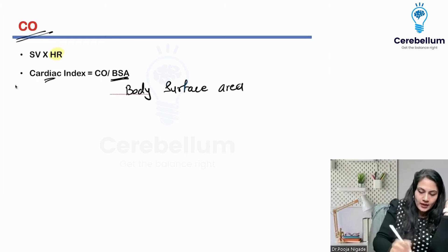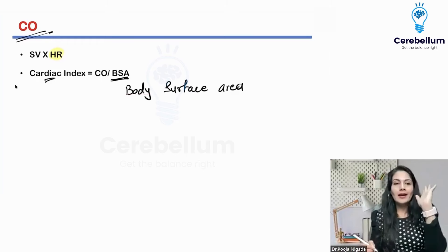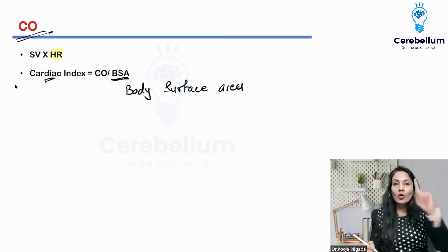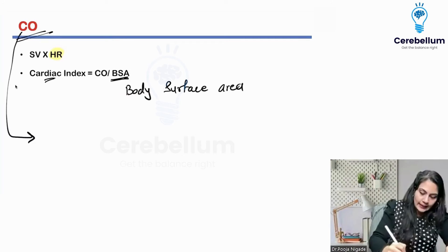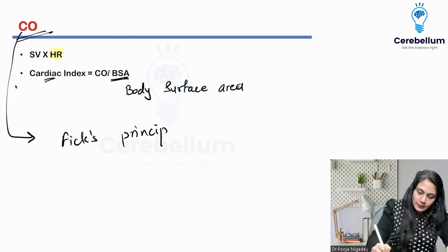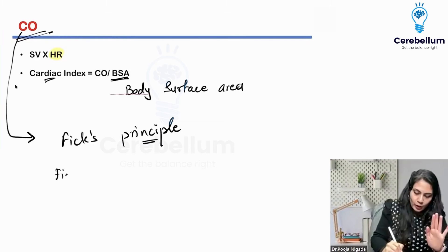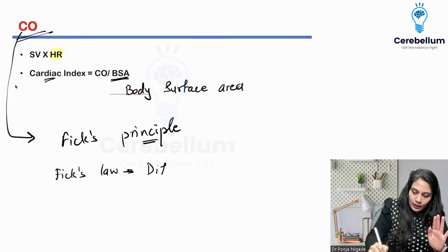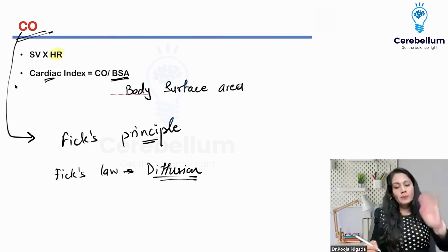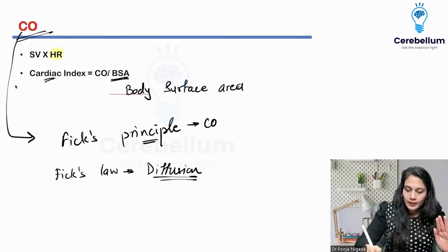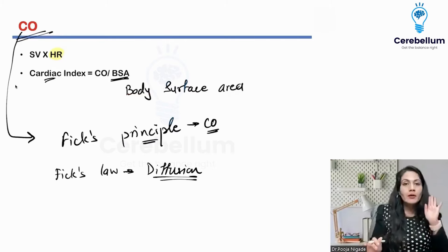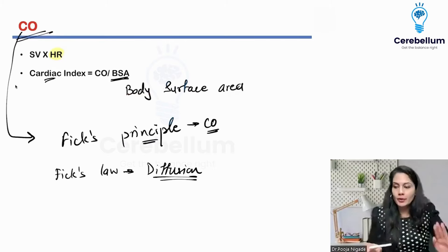To calculate cardiac output, I need something known as the Fick principle — just remember the name. Note carefully: Fick's law is useful in the calculation of diffusion, while the Fick principle is useful for the measurement of cardiac output. Please remember that distinction.